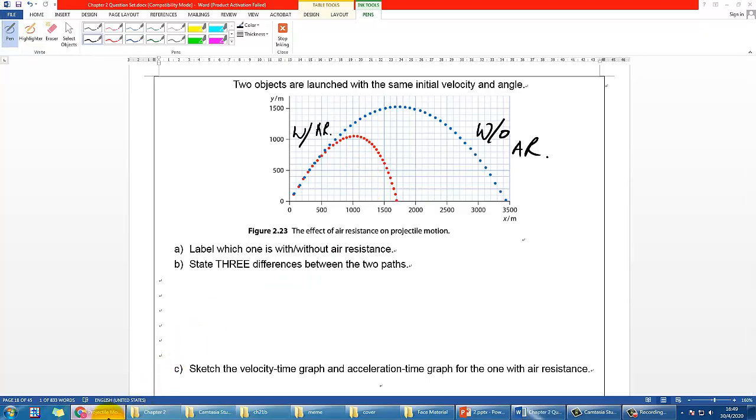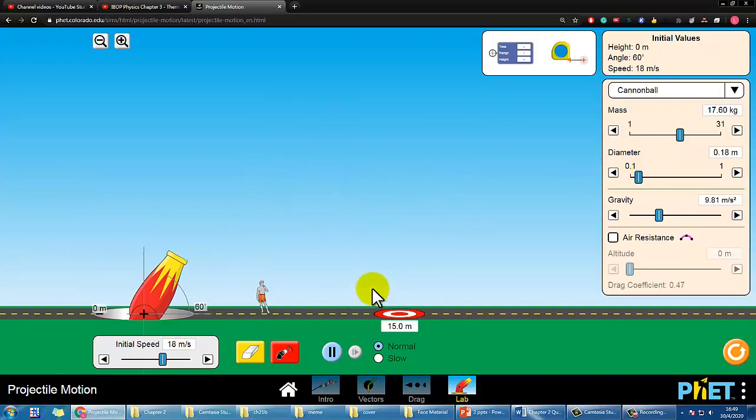We can also try it with our simulation as well. Here I just basically set it up with some random parameters. Now it's without air resistance so let me launch it. And now I would switch on the air resistance. Notice that I don't change any setting here.